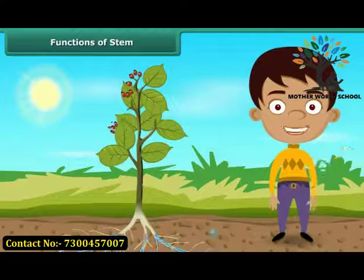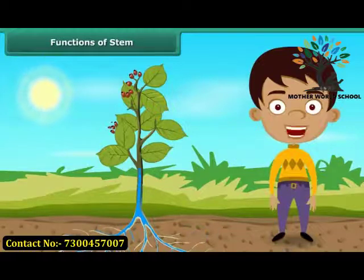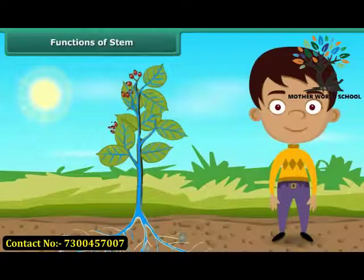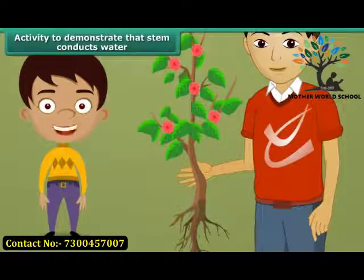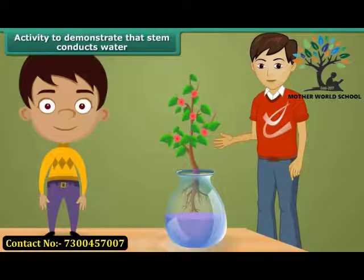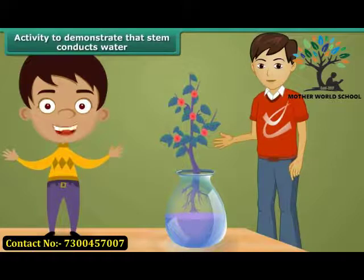Roots absorb water and minerals from the soil — but how does the water and minerals absorbed by the roots reach the rest of the plant body? Through the stem. The stem conducts them to the leaves and other parts of the plant. It also supports the plant, enabling it to stand erect, and exposes its leaves to sunlight. To demonstrate this, take a balsam plant with roots and put it in a pot containing colored liquid. After a while, you will observe the same color in the stem, leaves, and other parts of the plant. This proves that the stem conducts water from the roots to the other parts of the plant body.